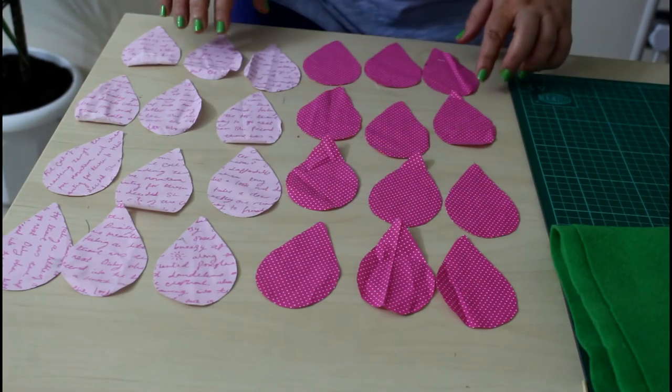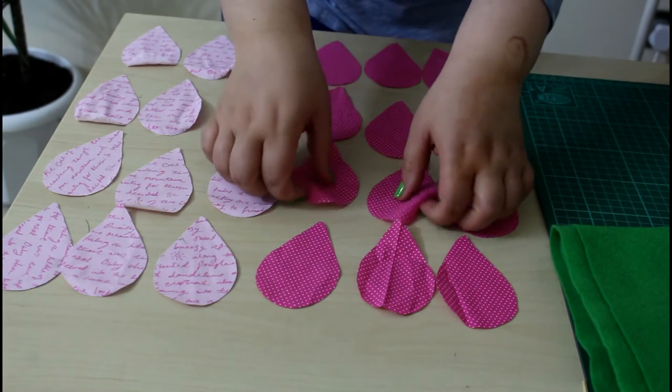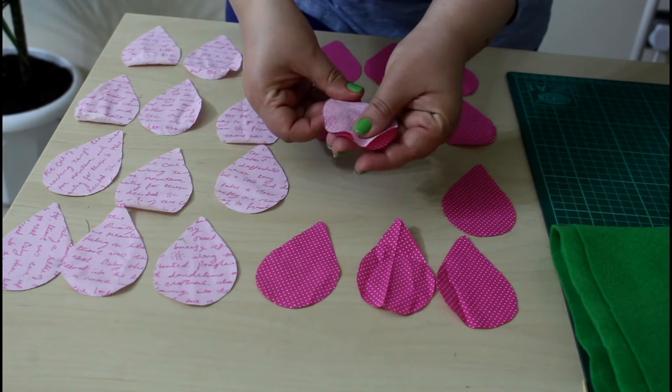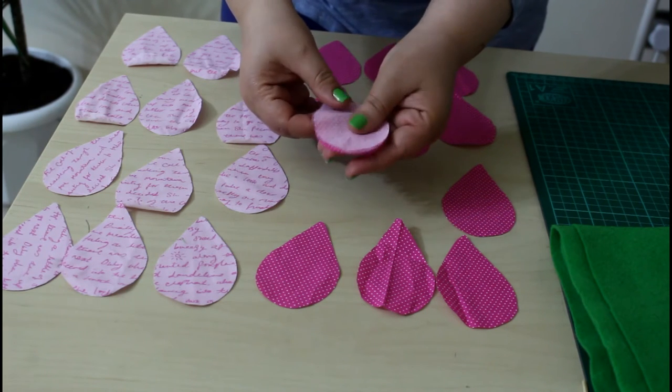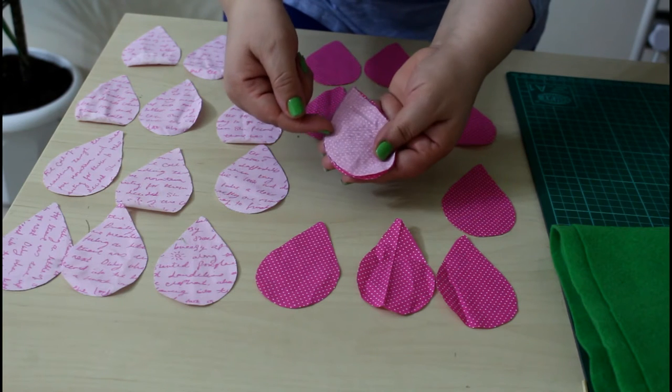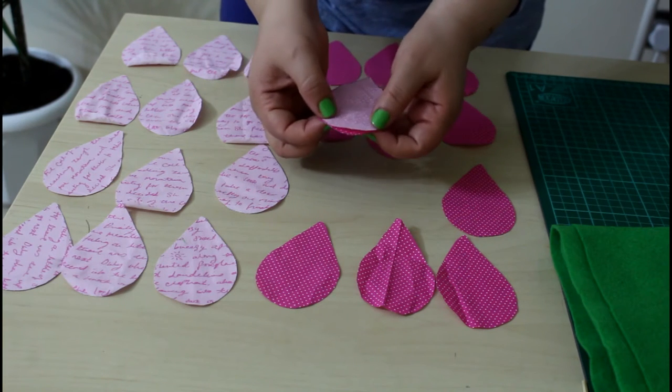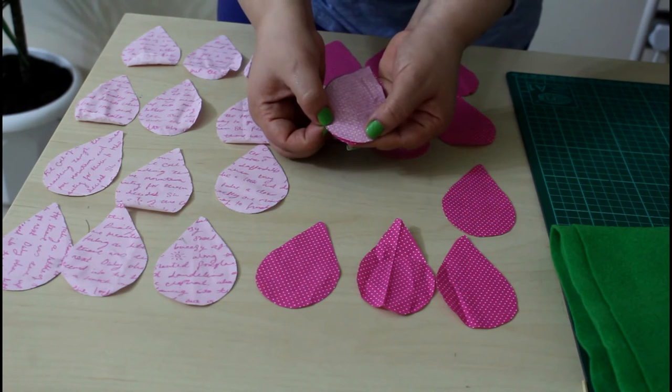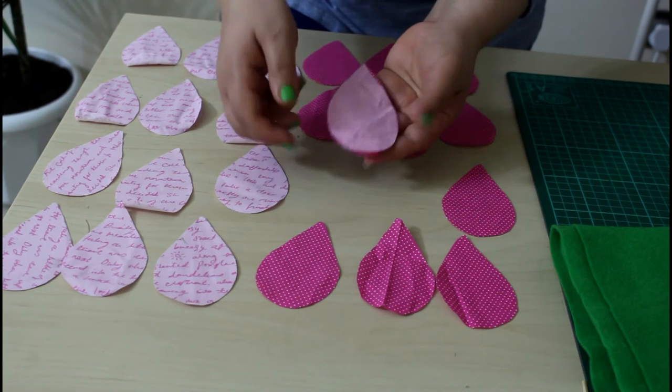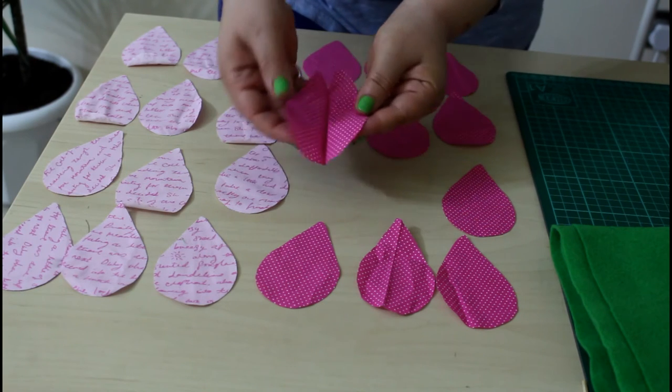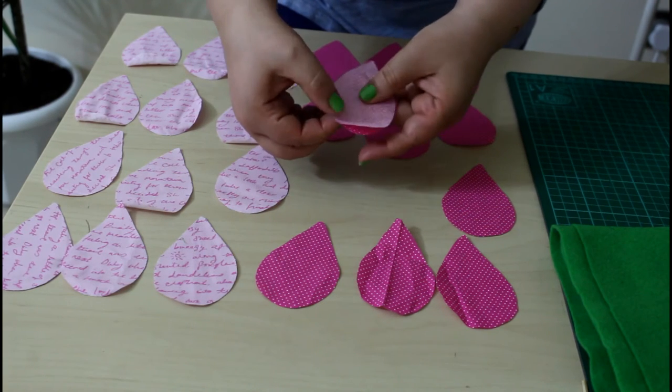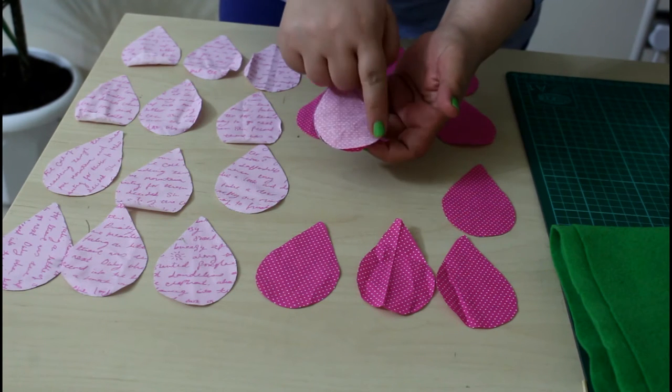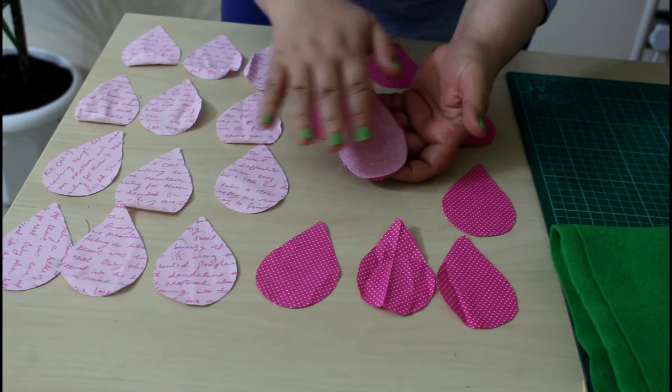Cut your petals and sew each two right sides together with one-eighth of an inch seam allowance, leaving an opening about half an inch from the open end at both sides to fill in. So you just put right sides together and you start and end with a backstitch, all around, leaving an opening for all the petals.